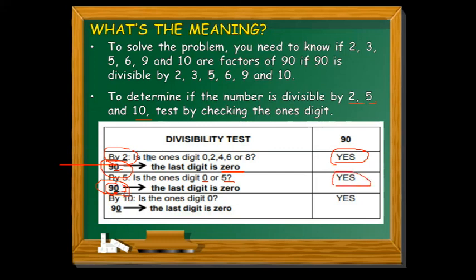And then last for this group, divisibility by 10: is the 1's digit 0? Looking at the 1's digit of 90, it is 0. So it means 90 is divisible by 10. It's a yes.